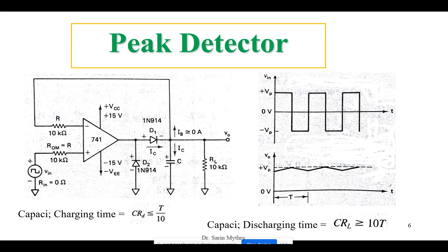Now let us see what happens here. During the positive half cycle of the input signal, you can see there are different kinds of components in the circuit. There is a resistor R connected as feedback with the output, and another resistor R connected with the input voltage source. There are two diodes D1 and D2. The peak value can be found out with the help of this capacitor.